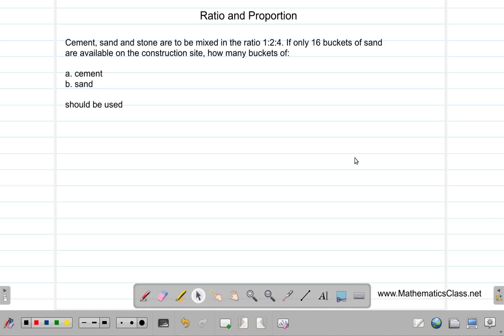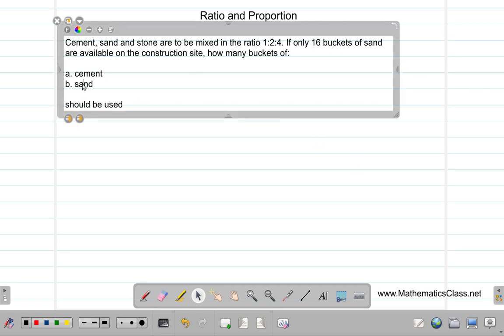We will continue to look at ratio and proportion with this example. Cement, sand and stone are to be mixed in the ratio 1 to 2 to 4. If only 16 buckets of sand are available on the construction site, how many buckets of cement and stone should be used?